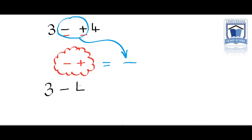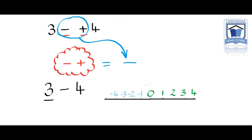3 take away 4. How do we work out 3 take away 4? Let's have a look at a number line — that will make it easier and you can visualize it. Here's a number line from negative 4 to 4. First of all the 3, the positive 3. We make a mark on the line at the 3, and then we're going to take away 4, so we go down 4. That will get us negative 1. So 3 take away 4 — that's 1, 2, 3, 4 down — equals negative 1.